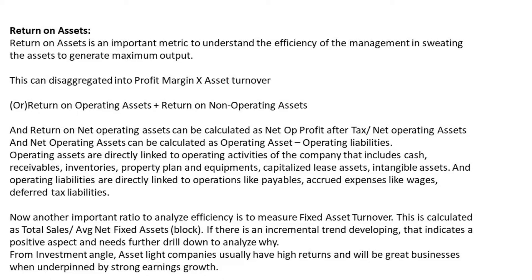Operating liabilities are directly linked to operations — items like payables, accrued expenses such as wages, and deferred tax liabilities. Subtracting operating liabilities from operating assets gives us net operating assets. We can calculate net operating profit after tax from the income statement, so using just the income statement and balance sheet we can arrive at this value, which really signifies how efficiently the company is running its assets.